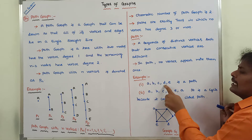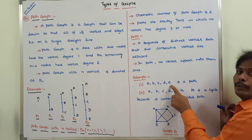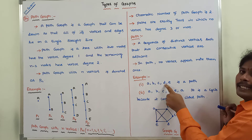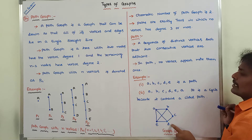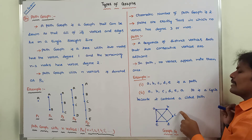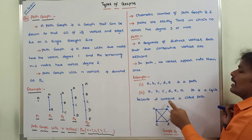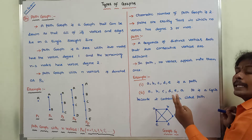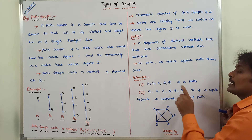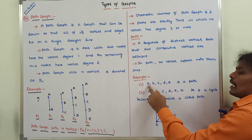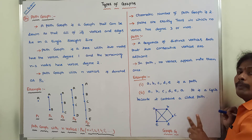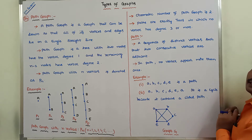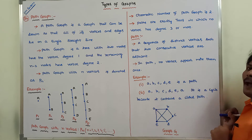A path is a sequence of distinct vertices such that two consecutive vertices are adjacent. We can take D and E — these are two consecutive vertices, so D and E are adjacent. Similarly, C and D are adjacent, B and C are adjacent, and A and B are adjacent. In that path, any two consecutive vertices are adjacent, and no vertex appears more than once.